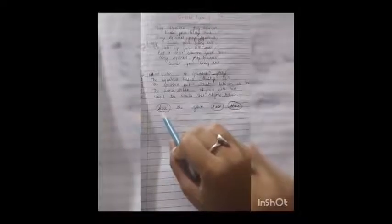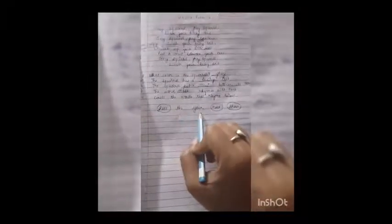Circle the words that make the rhyme below. Ab jo hai, jo rhyme karte hain words un pe circle karne hai. First is hose, the, nahi rhyme kar raha, your, no, nose, yes and those. So, this is the rhyming words.